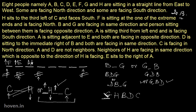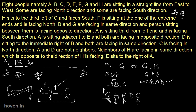Now let us take to the second pass to verify. H sits to the 3rd left of C and faces south — C is here, H is third left and faces south, so it is ok. F is sitting at one of the extreme ends and is facing north — that also fits. B and G are facing in the same direction and the person sitting between them is facing the opposite direction — G is upwards, B is upwards, and the person in between faces downwards. So it is ok.